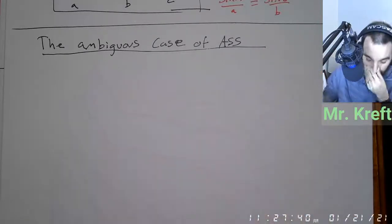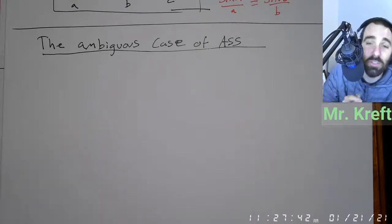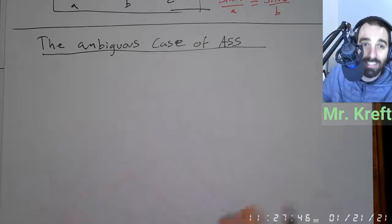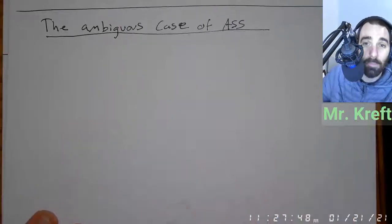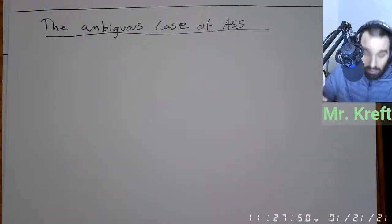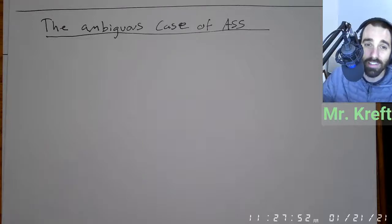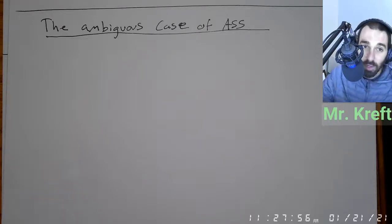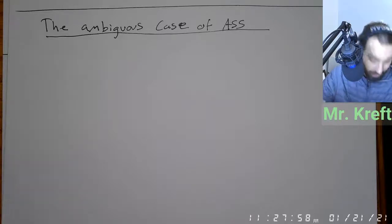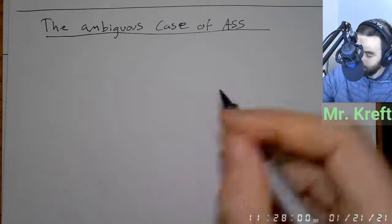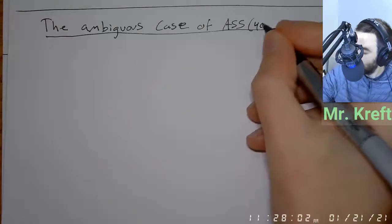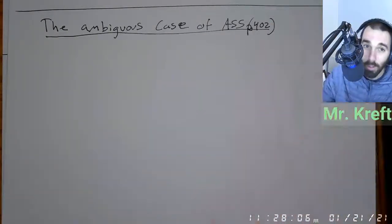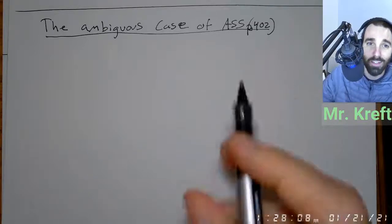Ambiguous means unclear. This is going to be really difficult to understand, so I'm going to set this up in stages. Just a pro tip: if at any point today you get lost or disconnected, everything I'm going to talk about is summarized on page 402 of your book. Not 420 — don't be dyslexic on me. 402.